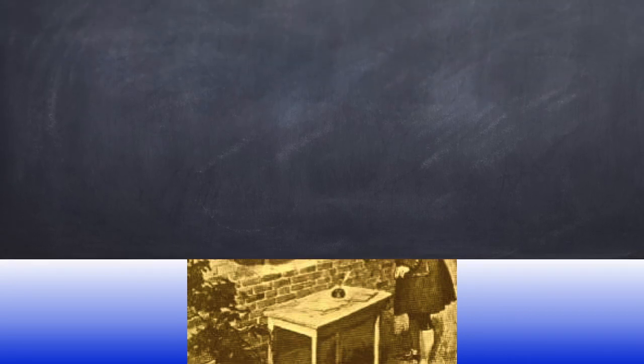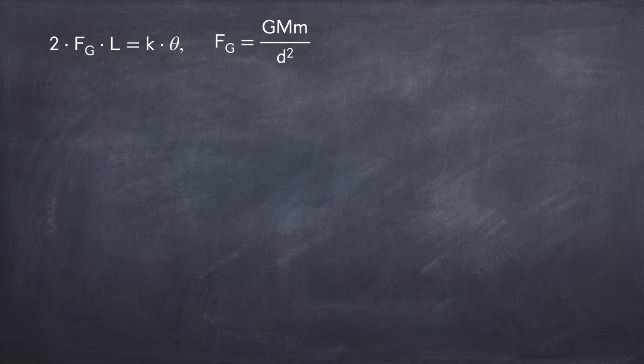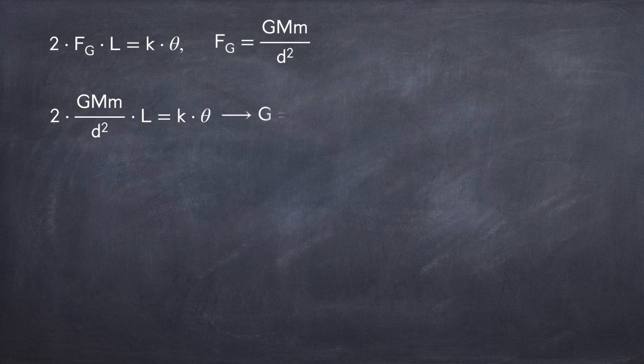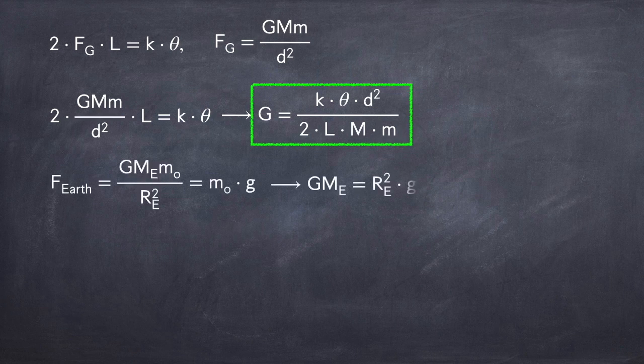Going back to the torque equation we derived, we have 2 times F_G times L equals k times theta, and now we've measured theta. We can now plug in Newton's law of gravitation into the force of gravity, and then solve for Newton's constant. Now recall, in the case of the Earth's gravitational force, we only knew the product of Newton's constant and the mass of the Earth, but now we have Newton's constant, and so we can solve for the mass of the Earth.